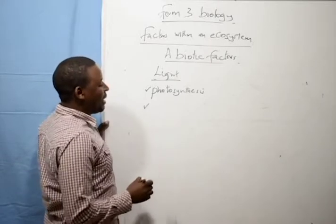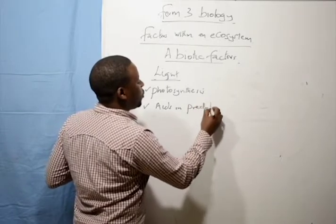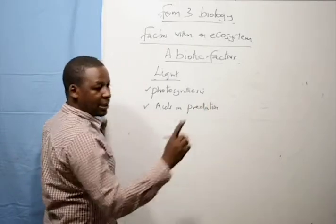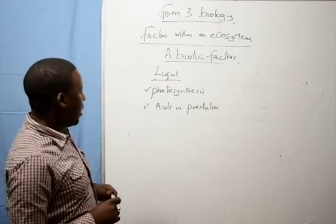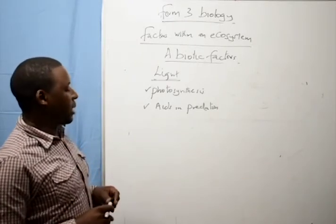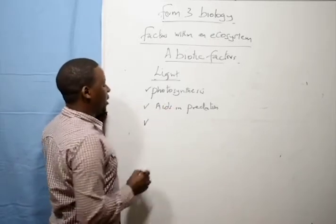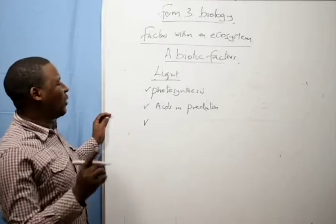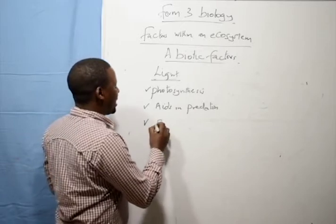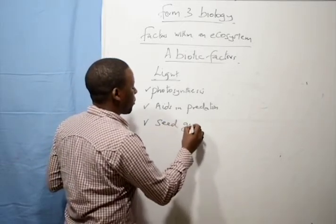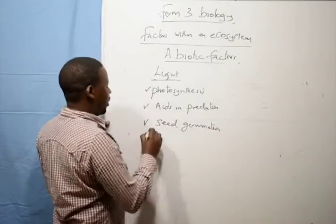Light aids in predation. For animals to hunt they need light to see. Therefore light aids in predation. Light is very important for animals to see. Some plants cannot germinate without enough light. Light aids in seed germination.